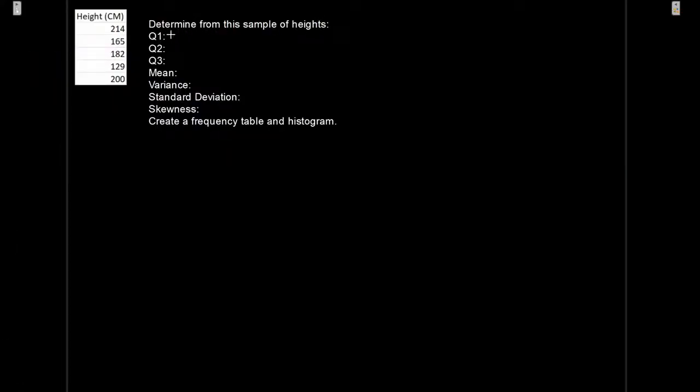We have what we're trying to determine from this sample of heights: a whole bunch of descriptive statistics, and then we want to create a frequency table and histogram. One of the first things I'm going to want to do, because we're looking for quartiles, is I want to organize my data from smallest to largest. So let's start off looking at that.